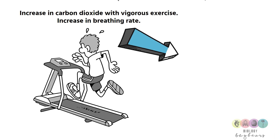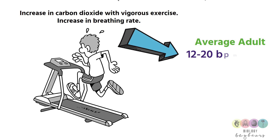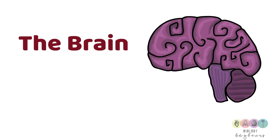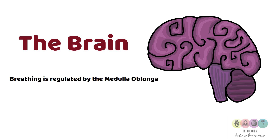The average adult at rest will take between 12 and 20 breaths per minute, and this is reliant on a number of factors — age being one. Breathing is controlled by the brain, and the part of the brain that regulates breathing is the medulla oblongata. It's important that you can recognise its location at the base of the brainstem.